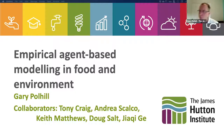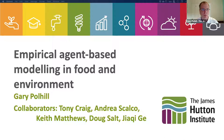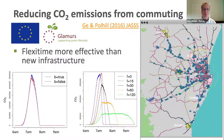Hello, I'm Gary Pothill. I'm a Senior Research Scientist at the James Hutton Institute and I've been working for just over the last 20 years on agent-based modelling in food and environmental systems. I'd like to give a quick acknowledgement to my collaborators: Tony Craig, Andrea Scalco, Keith Matthews, Doug Salton, and Jachi Gur, who is now at the University of Leeds. What I thought I'd do is give an overview of some of the modelling work we've done before giving more attention to some of the challenges we need to address if we are to achieve the mainstreaming of agent-based modelling.